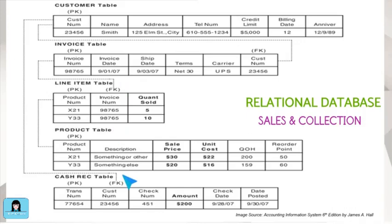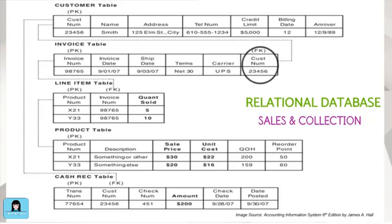For example, the customer table contains data such as customer account number, customer name, address, telephone number, credit limit, and more. The primary key on this table is the customer account number. The sales invoice table contains invoice number, invoice date, shipping date, terms, customer account number, and more — with the primary key being the invoice number. The two tables are related because the sales invoice table includes a customer account number, meaning that for every sale, a customer is associated.